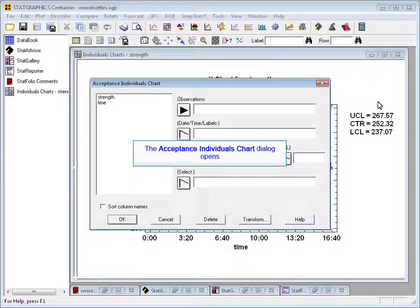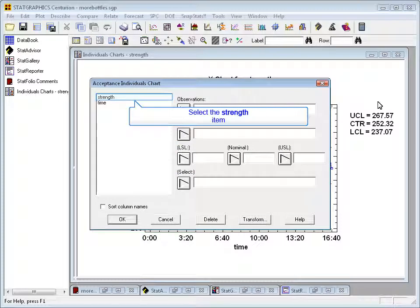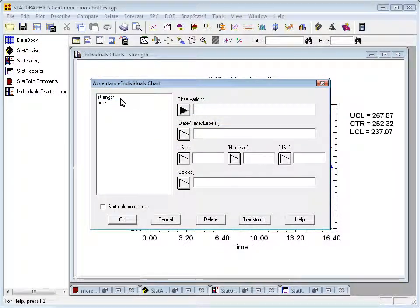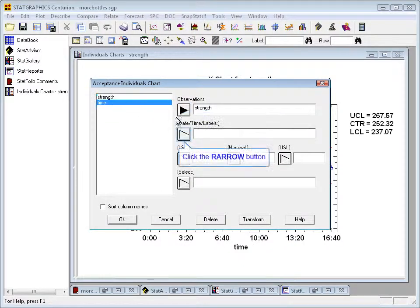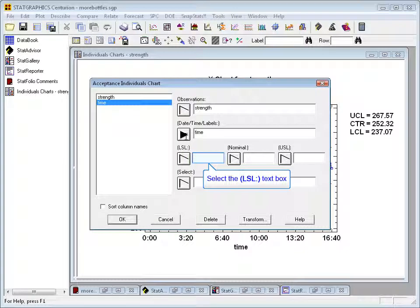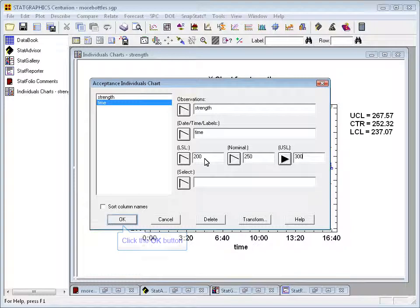When I select that menu item, a data input dialog box will come up. I'll tell it that my observations are in a column labeled strength and that I have identifiers in a column labeled time. The lower specification limit for strength is 200, the nominal or target value is 250, and the upper specification limit is 300. I don't need both the lower and upper spec, I need at least one of those. In this case, I have both.